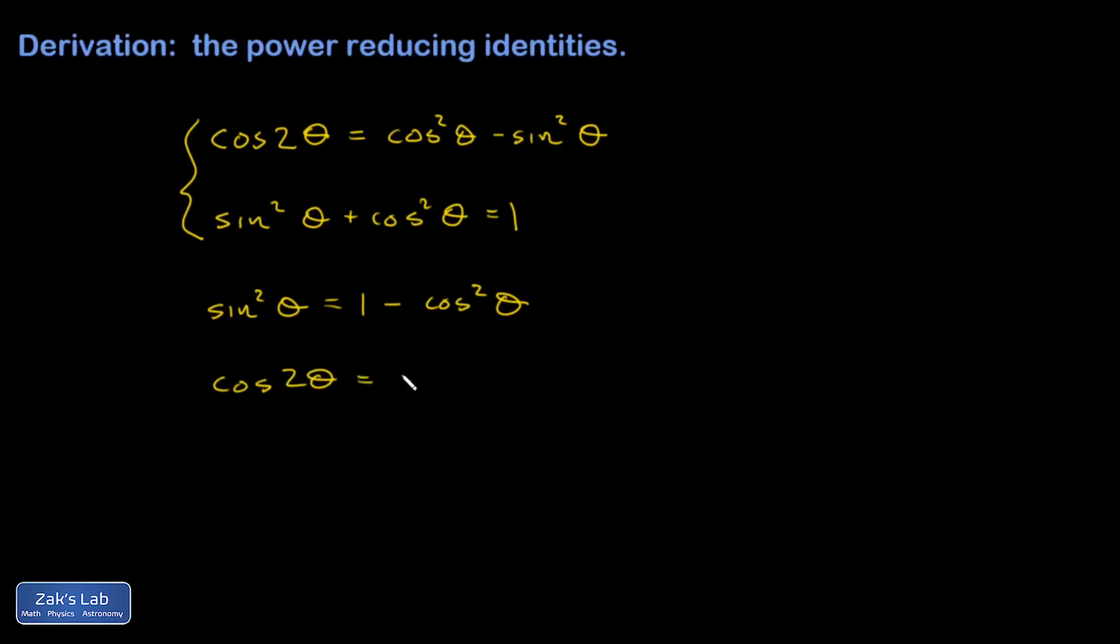I get cosine 2θ is cosine squared θ minus the quantity one minus cosine squared θ. Cleaning things up on the right-hand side, I have cosine squared minus negative cosine squared.